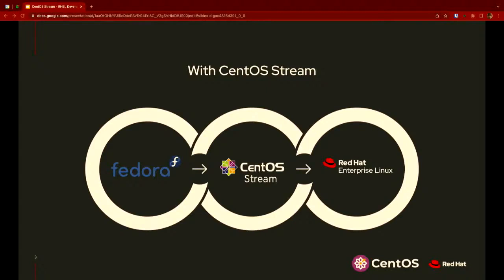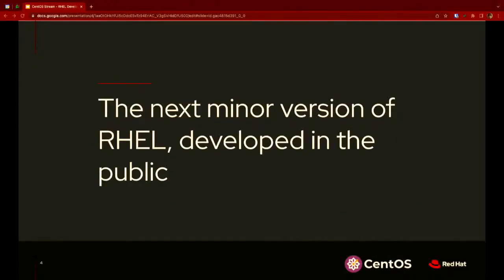RHEL 9 is now such that the entire development process for the minor releases flows through CentOS Stream. The upcoming releases of 9.1, 9.2, and so on — it's a continuous cycle of RHEL maintainers doing their work out in the open. One of the things we did as part of the project was fundamentally change the way RHEL maintainers do their work. The development of the next minor release doesn't happen inside Red Hat anymore; it happens out in the CentOS Stream project.